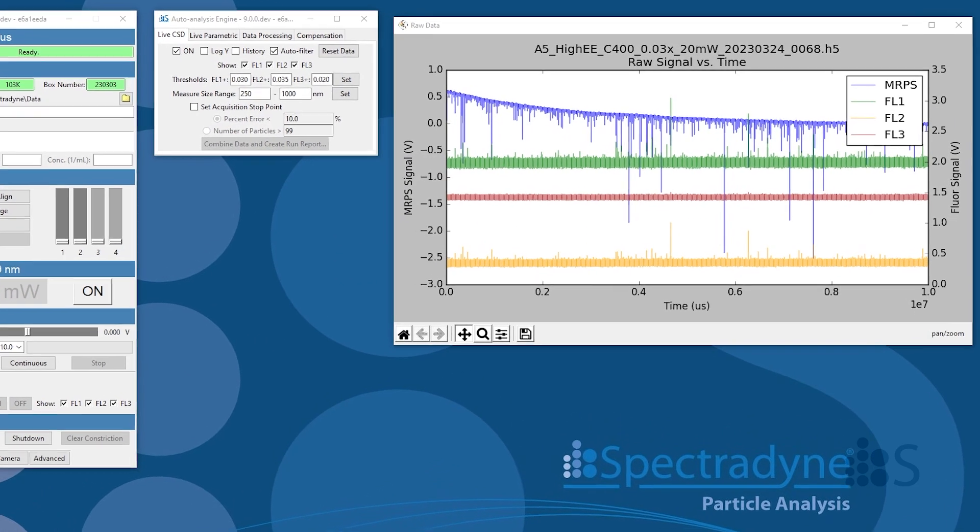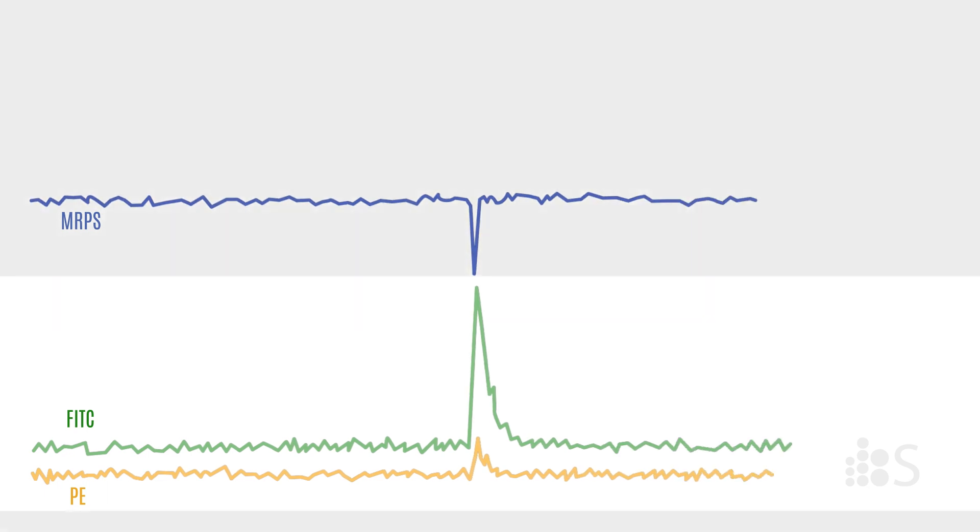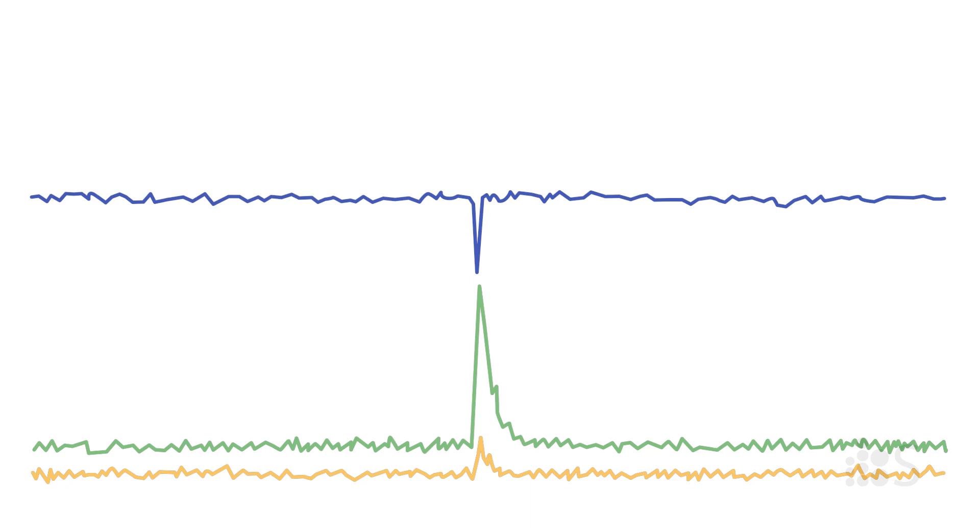Each downward spike in the blue trace is the detection of a single particle by MRPS. You can see some of these particles also generate a simultaneous signal in the fluorescence channel. These are the particles of interest.